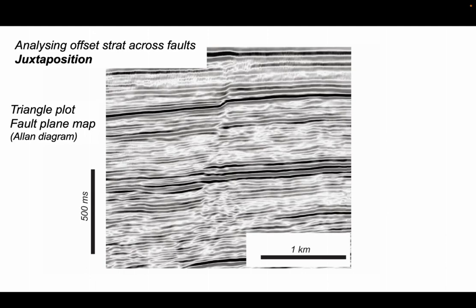So an early step in understanding the impact of faults in sedimentary basins for fluid flow is to analyze the offset of the stratigraphy across the faults, in other words the juxtaposition. And in this video we'll look at two ways of displaying juxtaposition, one in a triangle plot and one in a fault plane map, a so-called Allen diagram.